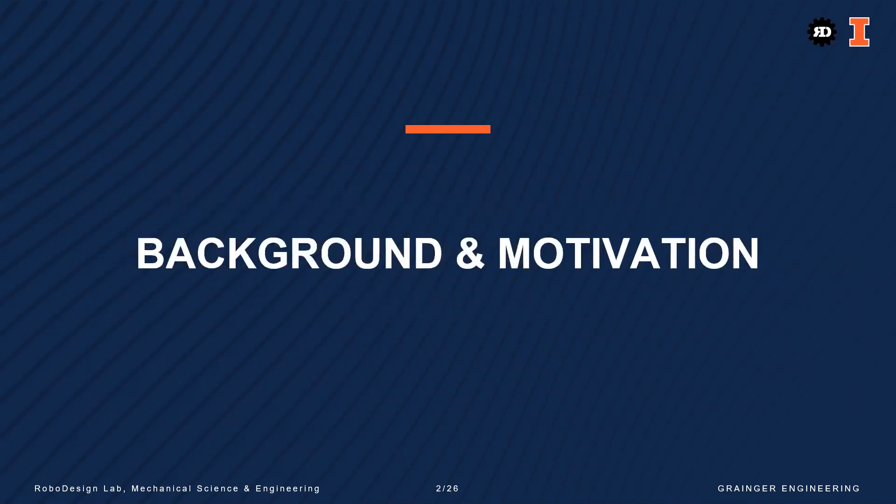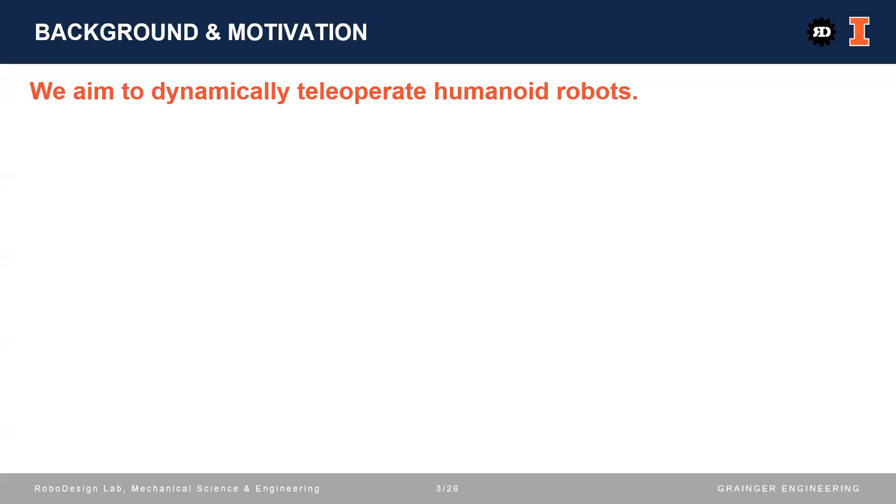Now, let's begin with the background and motivation. Our lab's aim is to dynamically teleoperate humanoid robots. Why teleoperation? Because teleoperation can harness human planning intelligence to enable machines to achieve sophisticated tasks that current autonomous machines cannot. As a benefit of the human planning intelligence harnessed, teleoperation has a potential to enable very dynamic motions of humanoid robots.